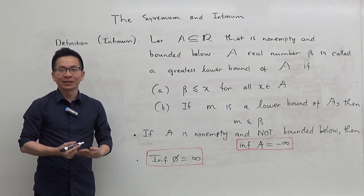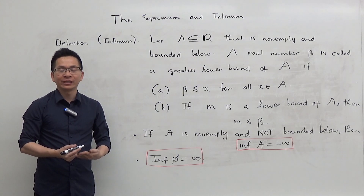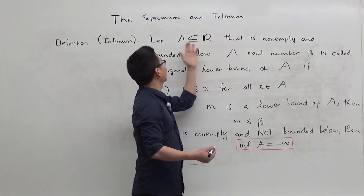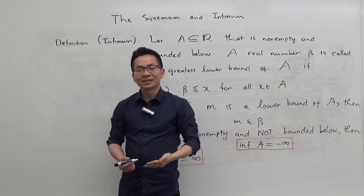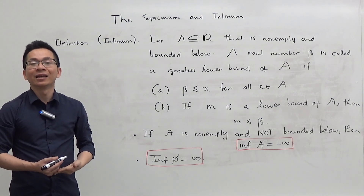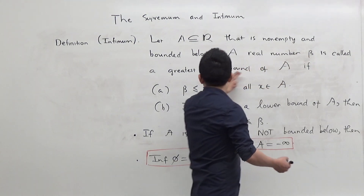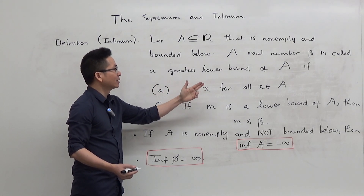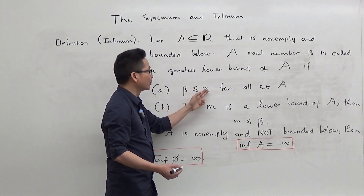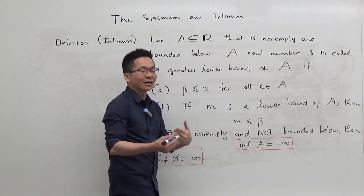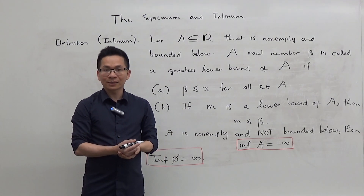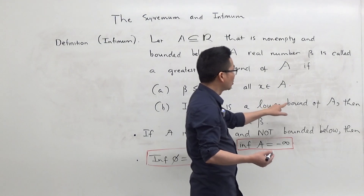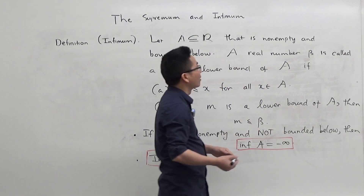Let me now talk about a very similar definition, that is the definition of the infimum of a set. Let A be a subset of the real line that is non-empty and bounded below — that means A is non-empty and it has a lower bound. A real number beta is called the greatest lower bound of A if, first of all, beta has to be a lower bound of A, meaning beta is less than or equal to x for all x in A. Secondly, beta is the largest number among all lower bounds of A, meaning if m is a lower bound of A, then m has to be less than or equal to beta.